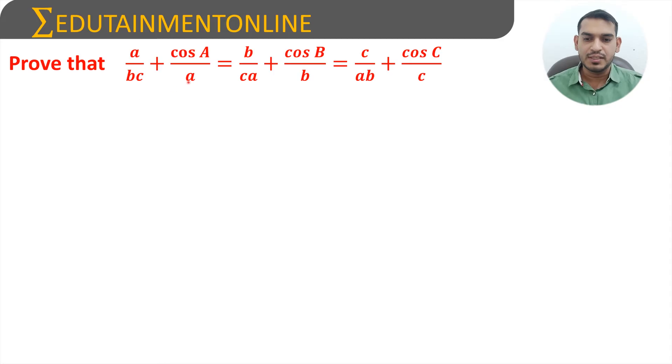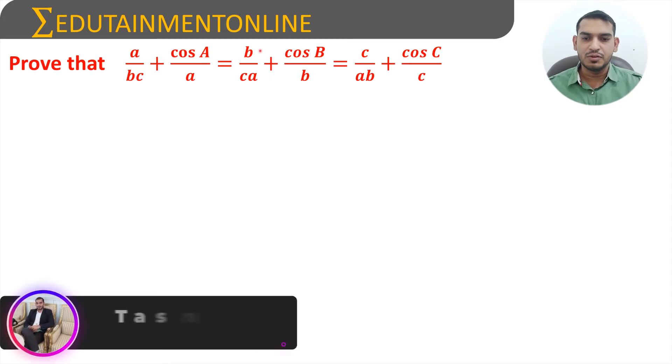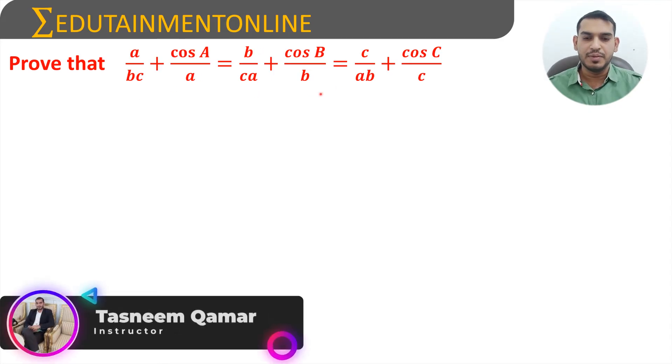We are to prove that a/(bc) + cosA/a = b/(ca) + cosB/b = c/(ab) + cosC/c.